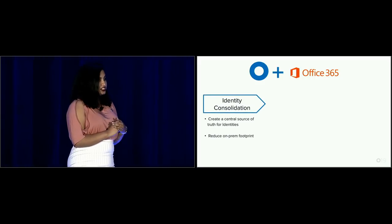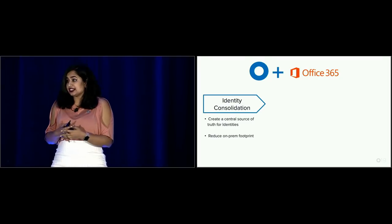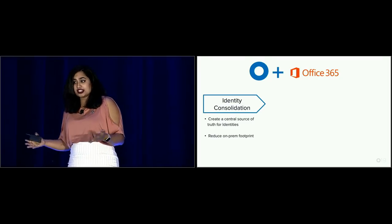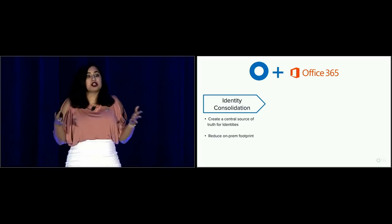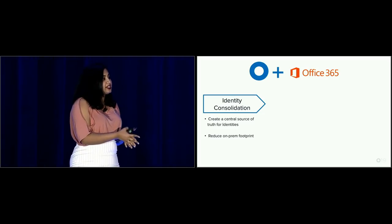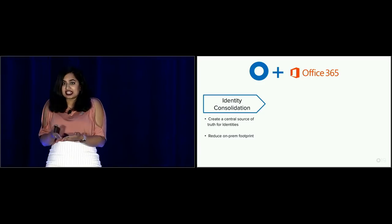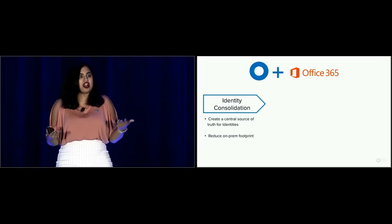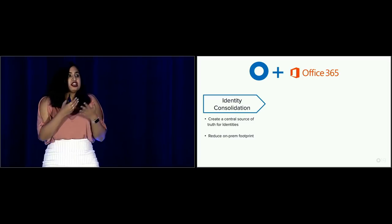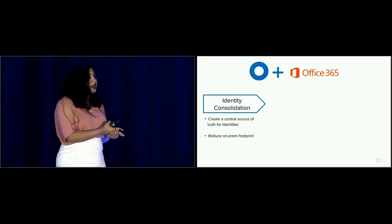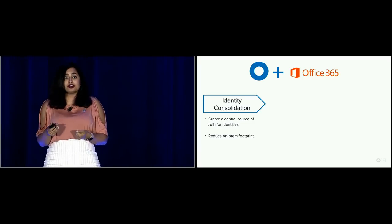First, identity consolidation. Let's take an example of where your identities may lie — you may be using several multiple AD forests, or you may be using another IDP. Regardless of where your identities are, the first step is: how do I get these identities to a place from which I can access them to start using Office 365, as well as my other cloud tools in Azure? This reduces your on-prem footprint, and Okta makes this an easy experience.